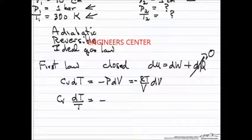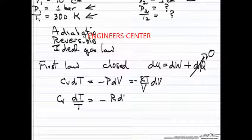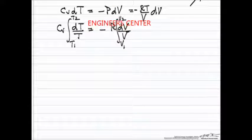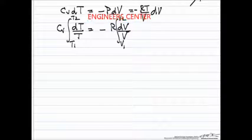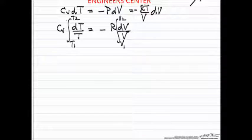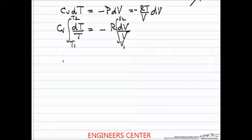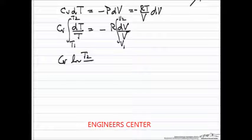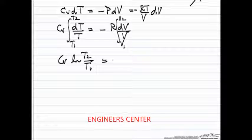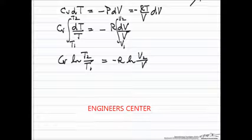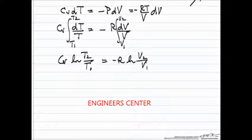So cv dT over T on the left side, dV over V. So we're going to integrate from the initial temperature 300 kelvin, initial volume 10, final volume 1, final temperature which we don't know. And we do the integration, we have a log term on both sides, and now we're going to do some rearranging.